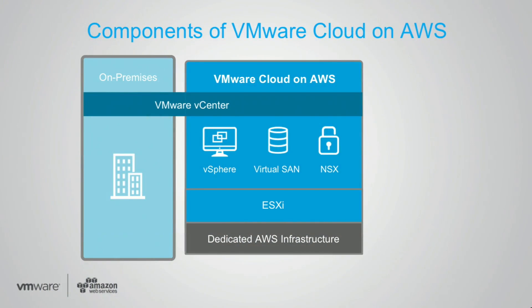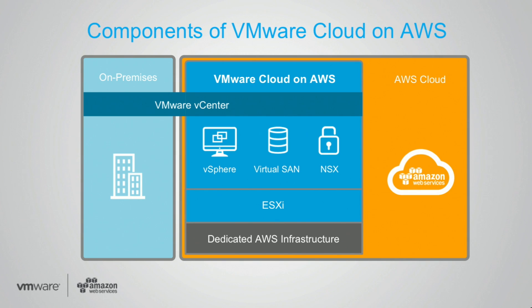As we go through the demo, we're really going to highlight three key things. First, we want to show how simple and fast we've made it to enable an entire VMware environment on the AWS cloud. Second, by linking it to a customer's existing on-prem environment, we can provide a common control plane across those two worlds that enables powerful hybrid use cases. Third, we'll show how joint customers can connect the rich portfolio of AWS services into this VMware cloud environment.